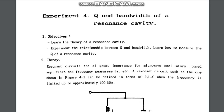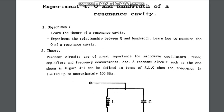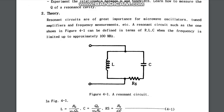Hello and welcome to experiment number four: the quality factor Q and bandwidth of a resonance cavity. The objective of this experiment is to learn the theory of a resonance cavity, understand the relationship between Q and bandwidth, and learn how to measure the Q of a resonance cavity. Now let's go through the theory.